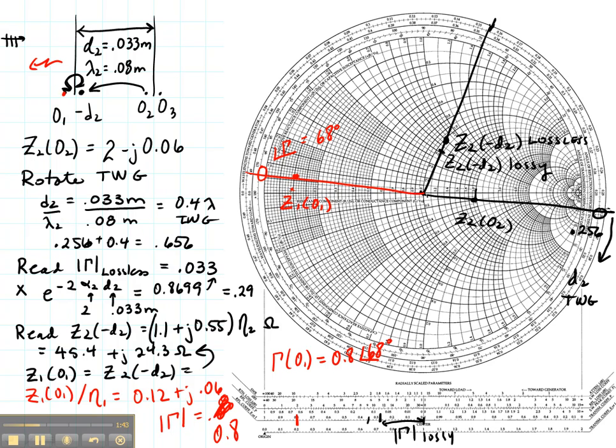Now let's review what we did. We started out with a three layer media that may or may not have had lossy components. We calculated the constants, that means alpha and beta and eta, and also the wavelengths in each of those regions.